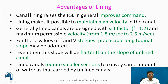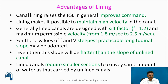Another advantage of lining is it improves the command. Due to lining, a canal requires a comparatively flatter slope, and with the same head, canals can reach up to greater distances. It is possible to maintain high velocities of 1.8 to 2.5 meters per second in lined canals, whereas the permissible velocity in unlined canals is 0.75 m/s. Since discharge Q equals cross-sectional area times velocity, higher velocities in lined canals mean a smaller cross-sectional area is needed, and a flatter slope is sufficient.